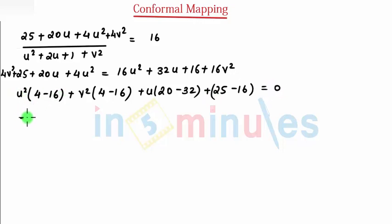You can write this as minus 12u square, minus 12v square, this as 20 minus 32 gives me minus 12u, and 25 minus 16 gives me 9, and that's equal to 0.